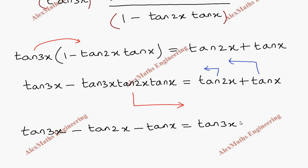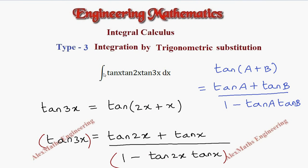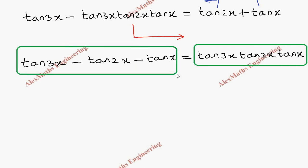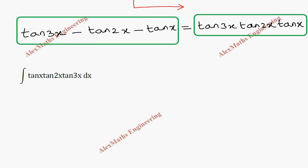In the question we have integral tan(x)tan(2x)tan(3x)dx, which is the product of all three. So instead of this, we are going to substitute this. Applying this term for the integration, this will become integral of tan(3x) minus tan(2x) minus tan(x)dx.